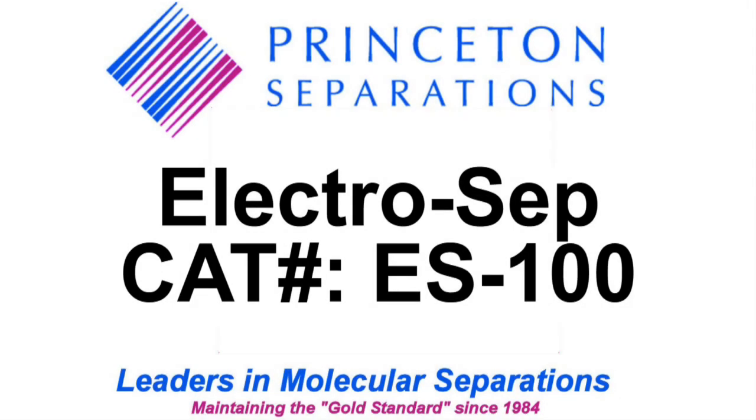ElectroCEP ES100 by Princeton Separations. Conventional means of DNA electrophoresis typically includes ethidium bromide.